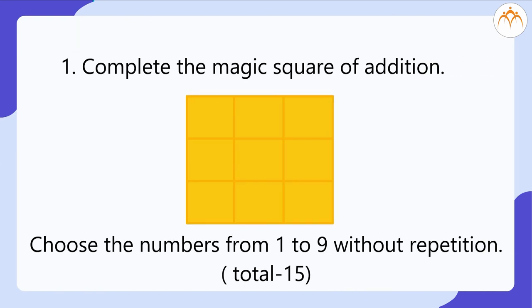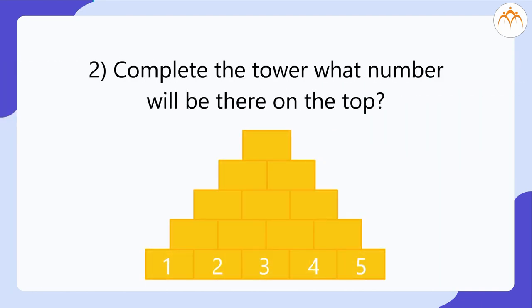Exercise. Complete the magic square of addition. Choose the numbers from 1 to 9 without repetition. Total should be 15. Complete the number tower. What number will be there on the top?